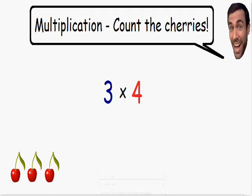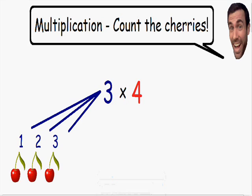Let's try another example. Here we have 3 times 4, which means 3 is being multiplied by 4. So let's solve this by counting the cherries. We're starting with the number 3, which is why we have 3 cherries. And these three cherries need to be multiplied by 4.